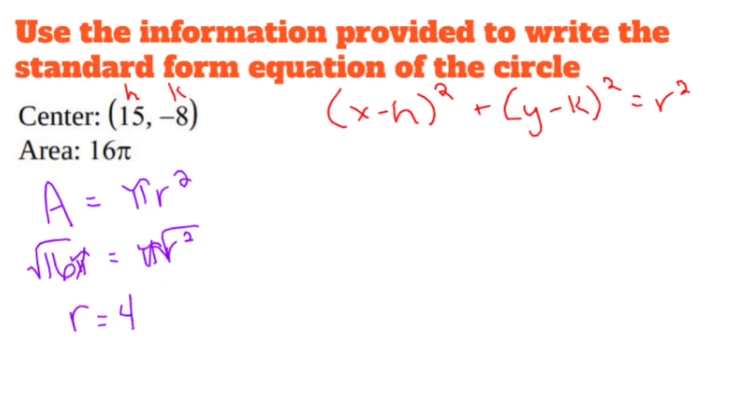Oh, so let's put all of this together, shall we? x minus h is x minus 15 squared plus sign. y minus k is y minus negative 8, a double negative. We'll deal with that in a second.